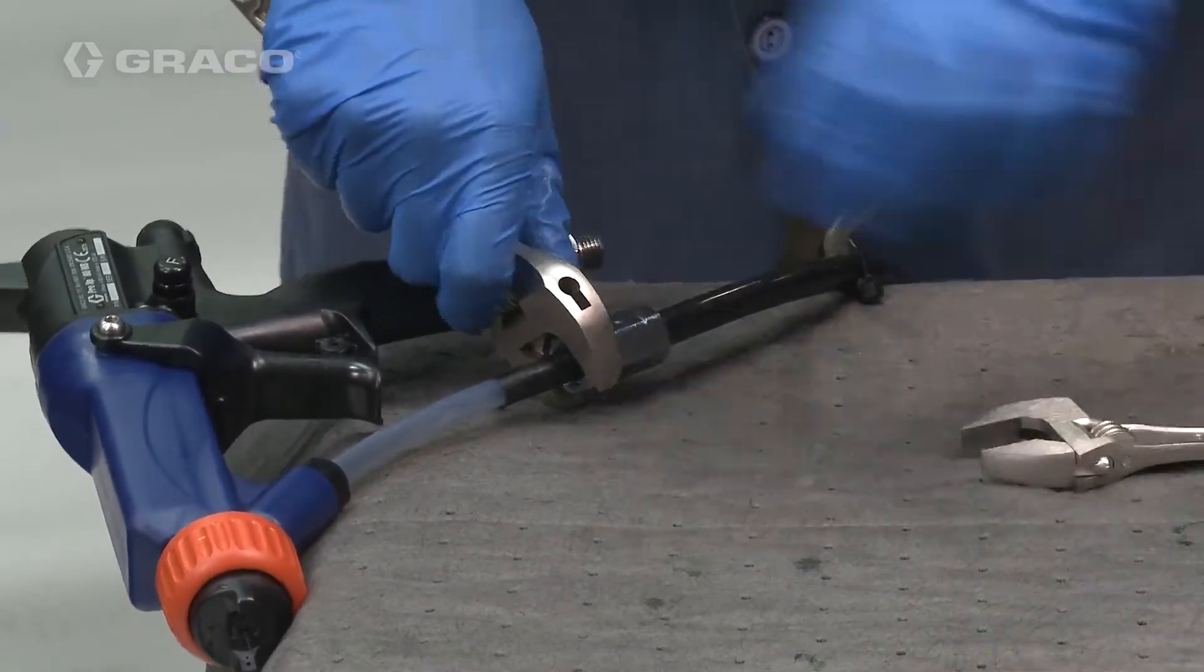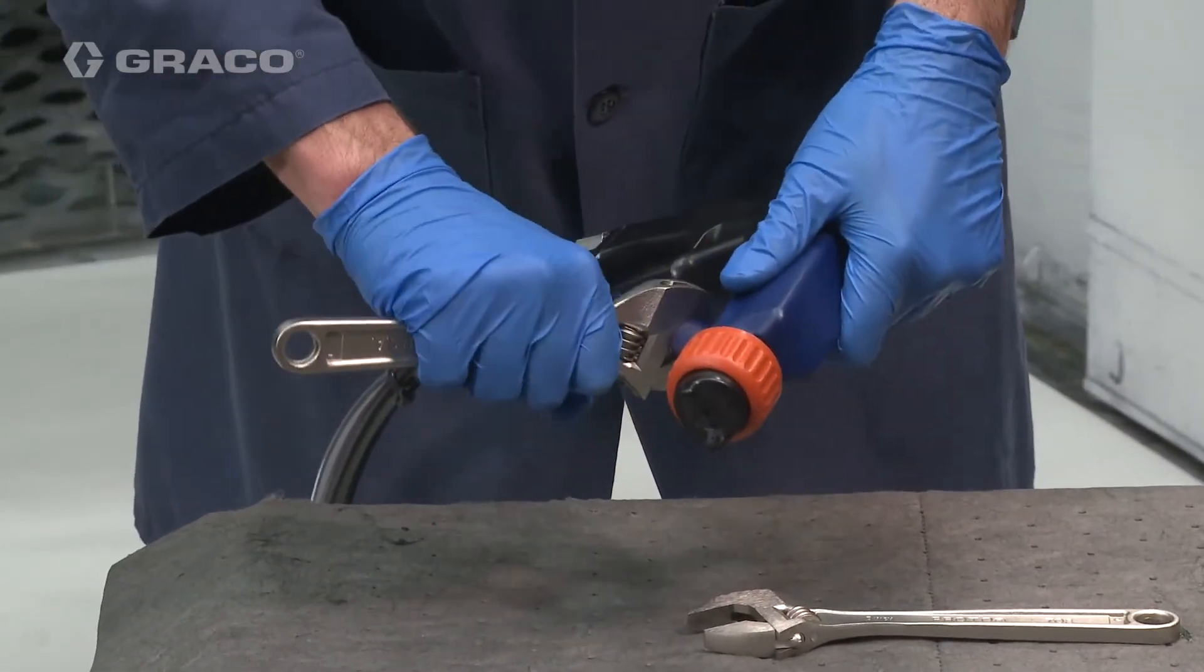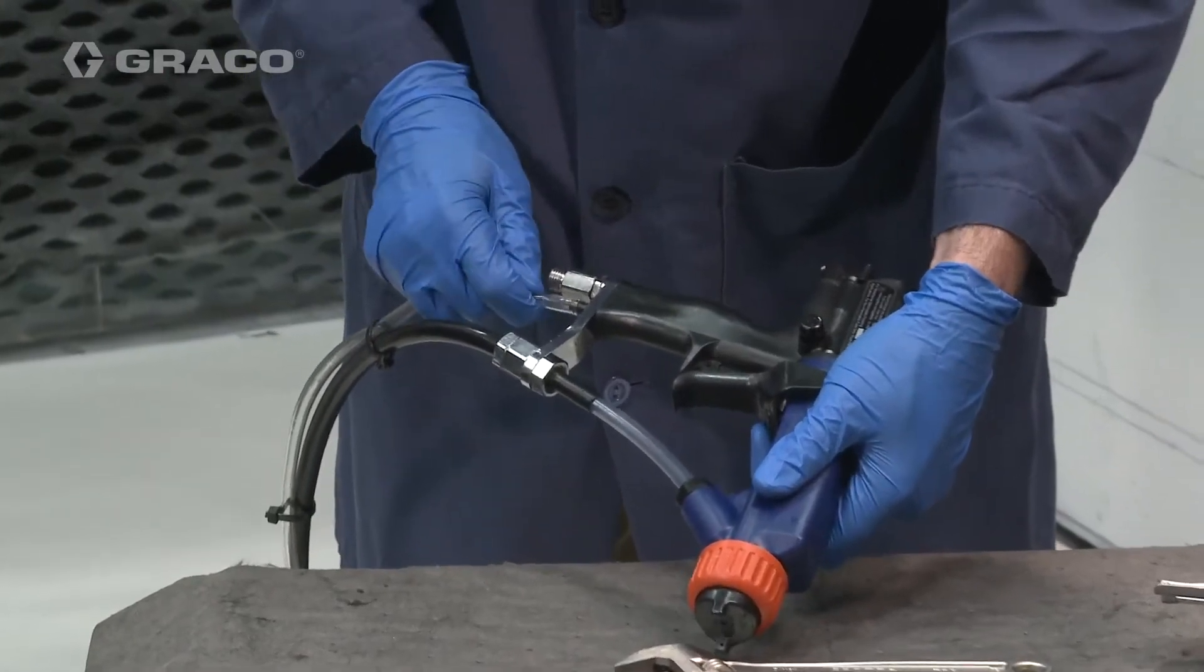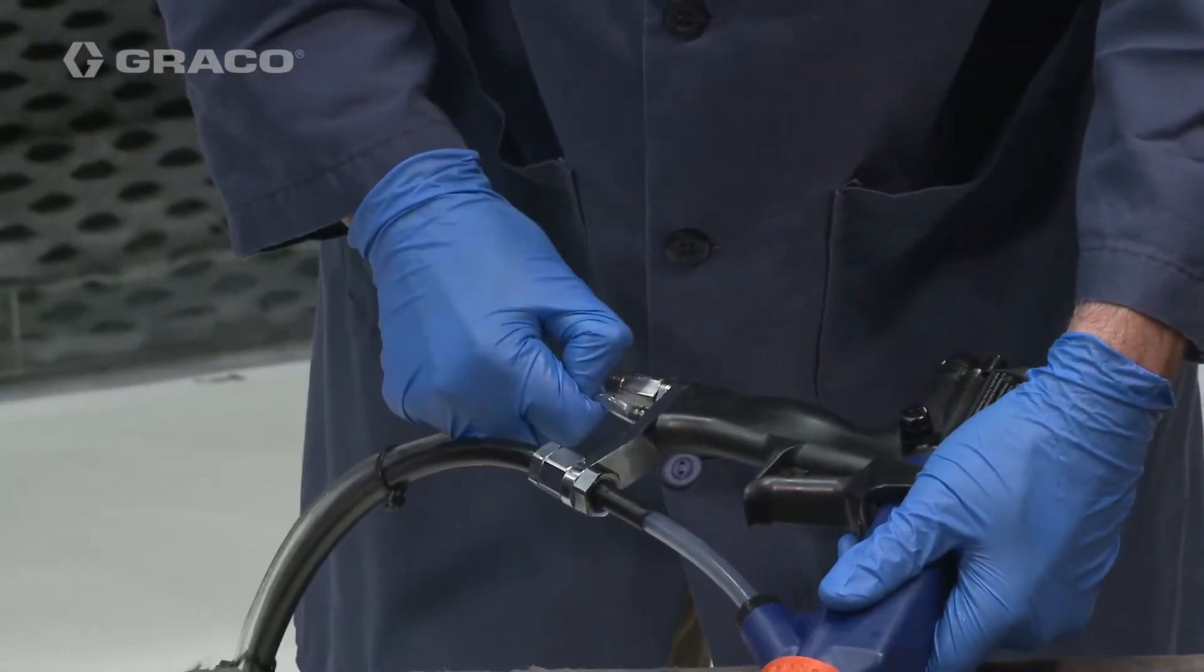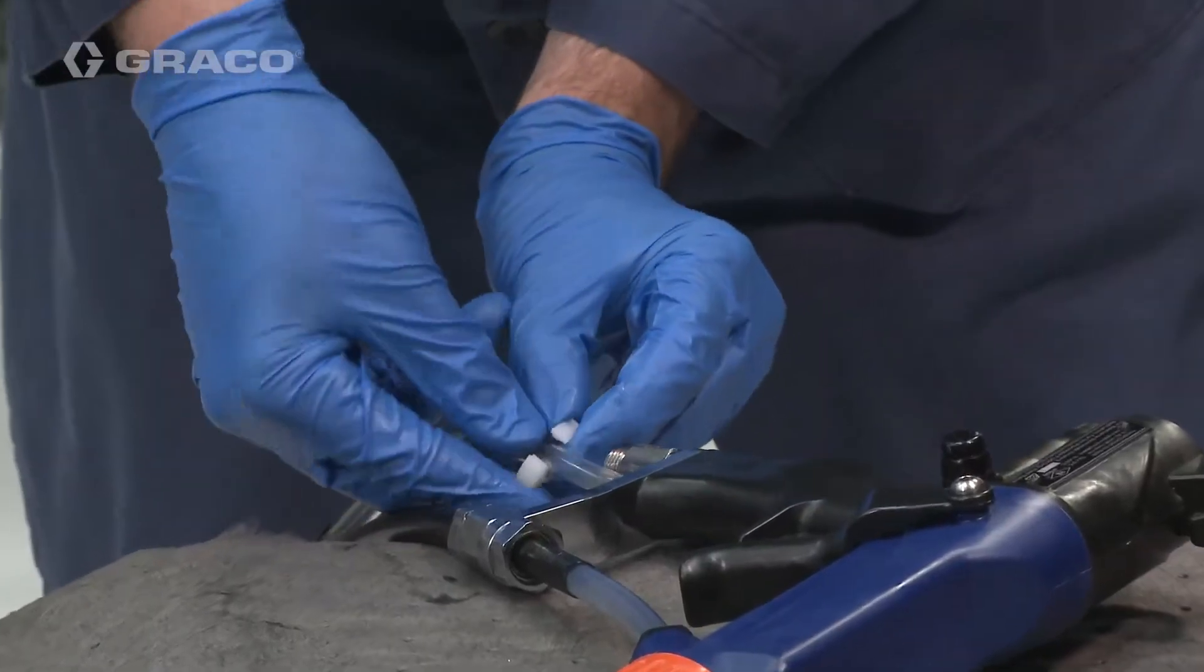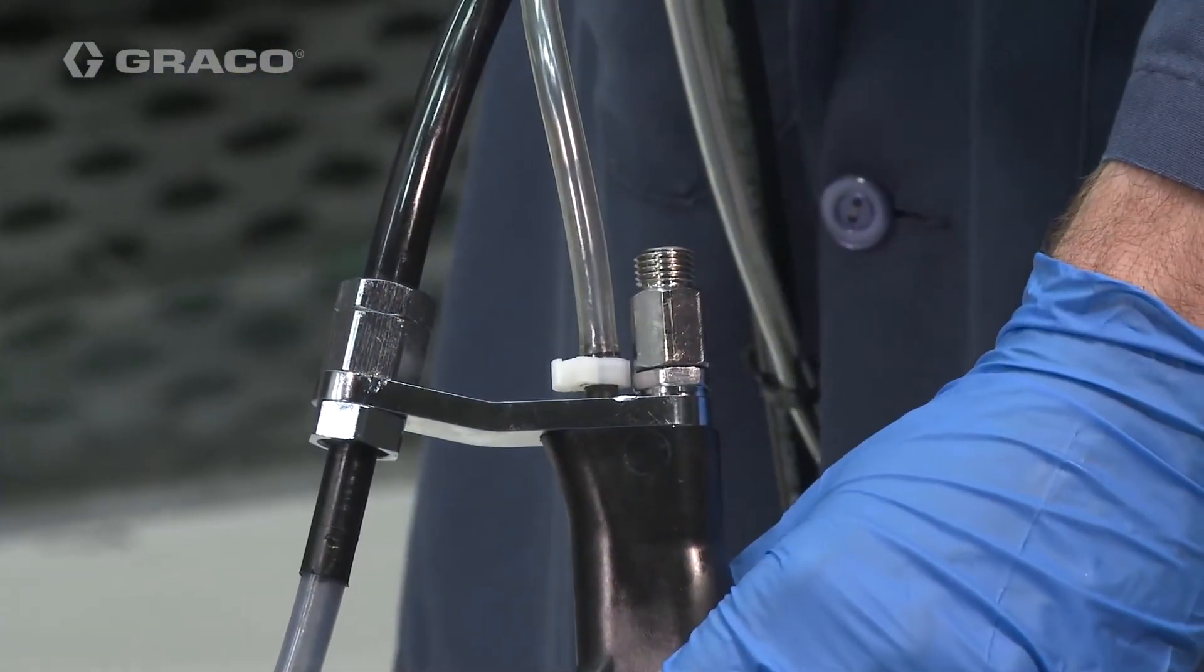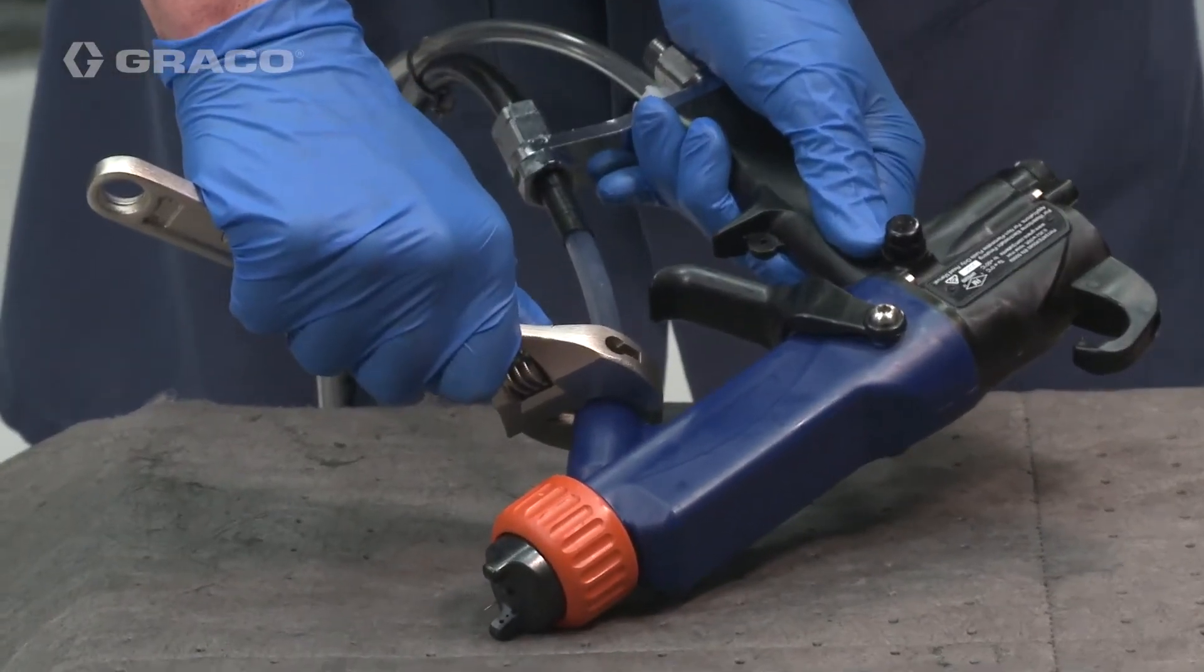Then, check that the nut and ferrule housing are tight and secure on the bracket. Press the exhaust tube onto the exhaust valve barb and secure with a clamp. Thoroughly tighten the fluid fitting at the barrel of the gun.